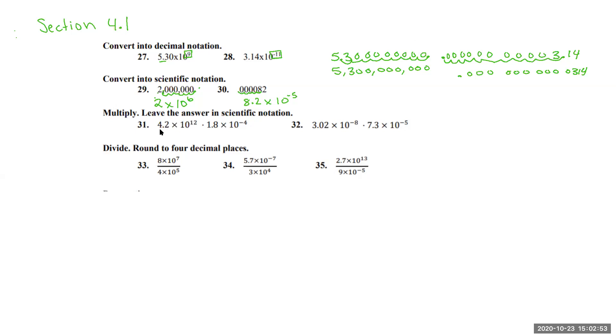Going down here to multiplying out the decimals, we are going to take 4.2 and multiply it by 1.8 first. So that gives us 7.56.